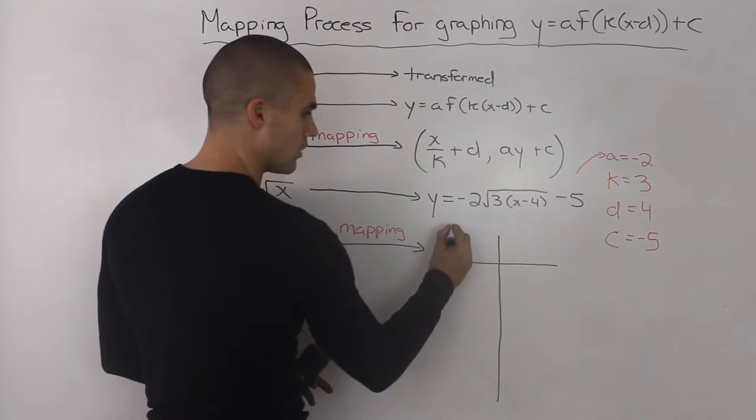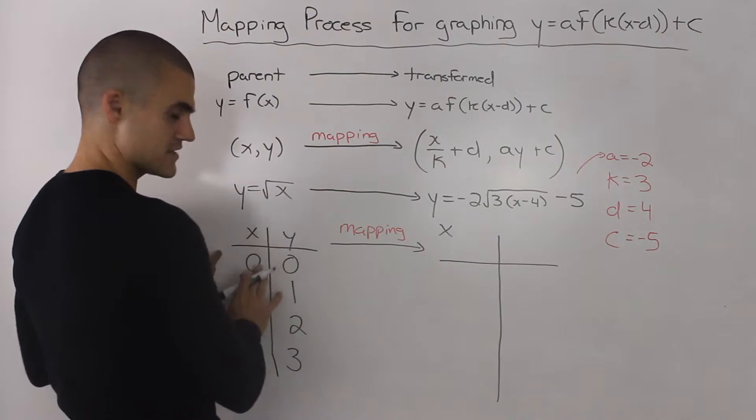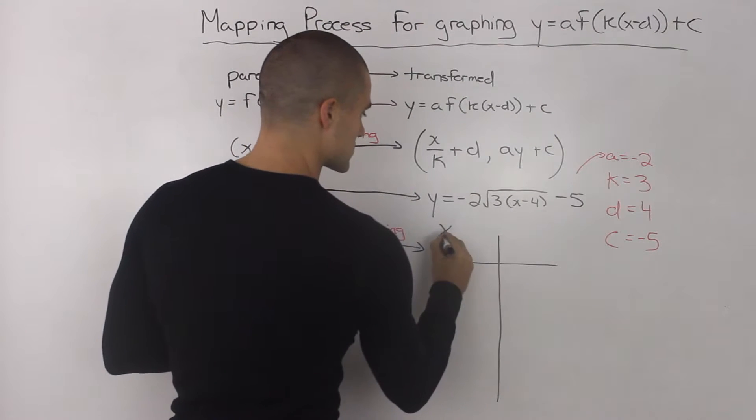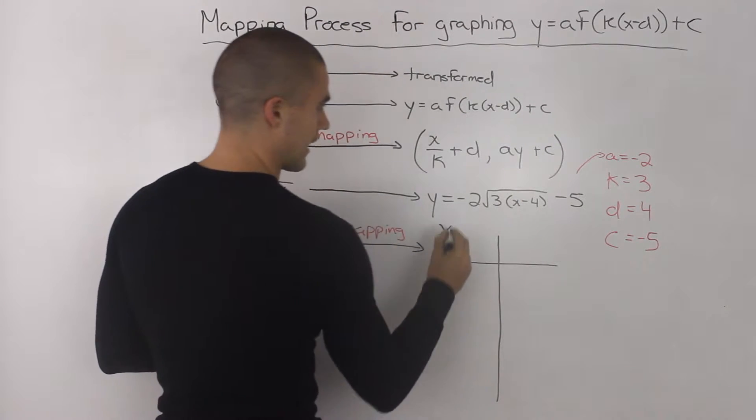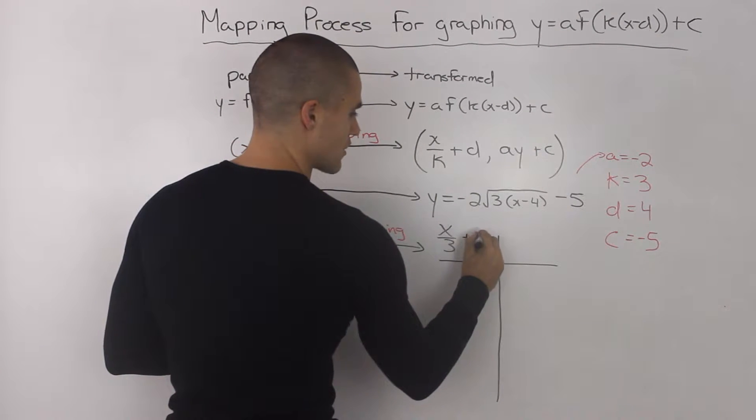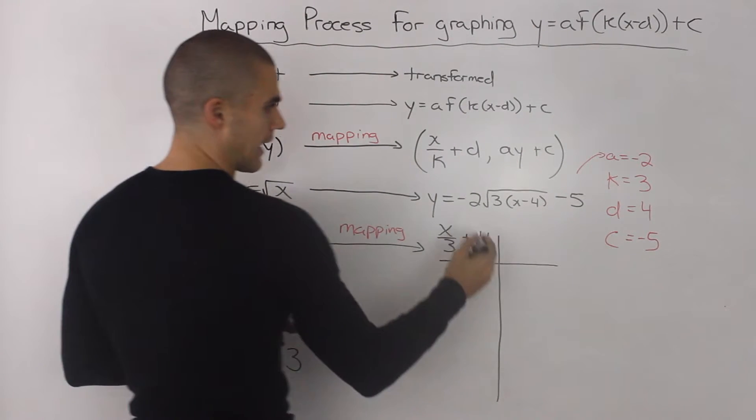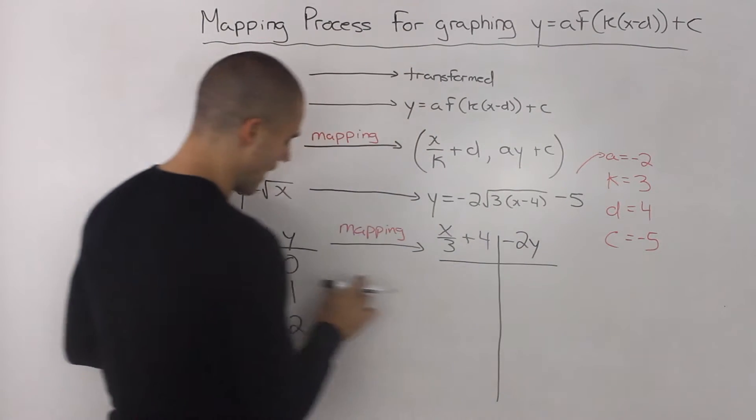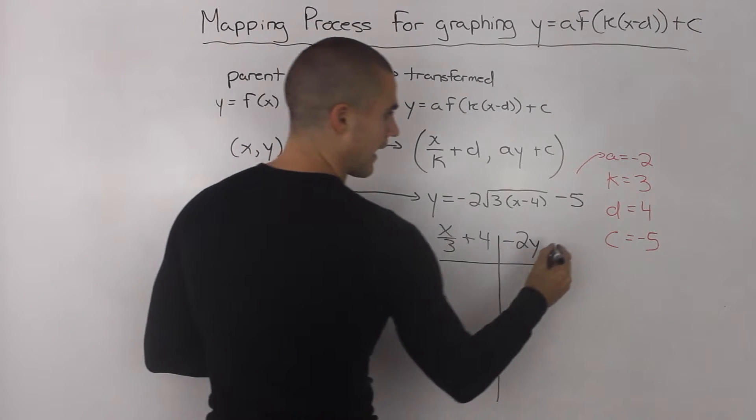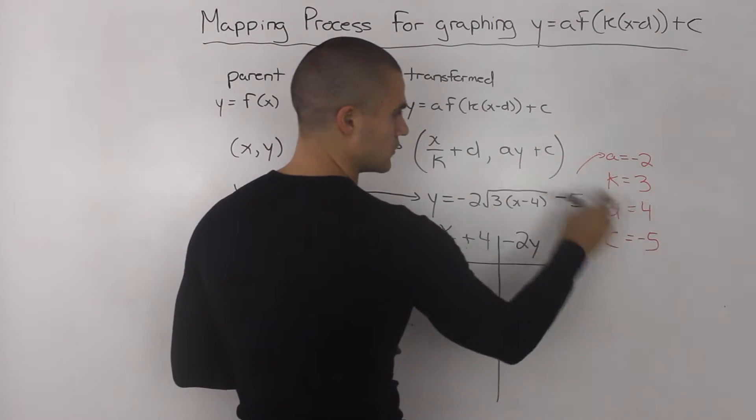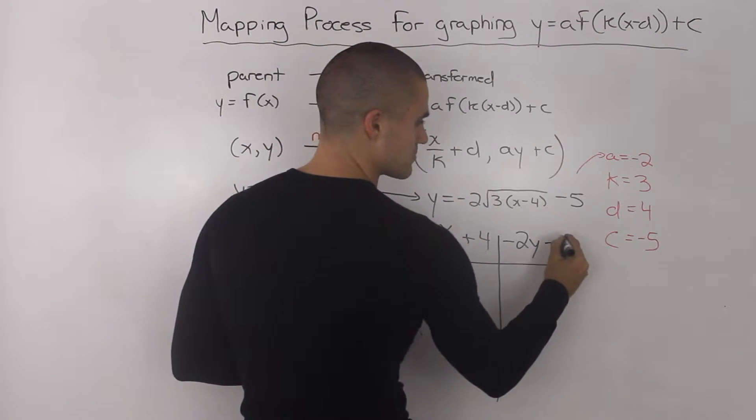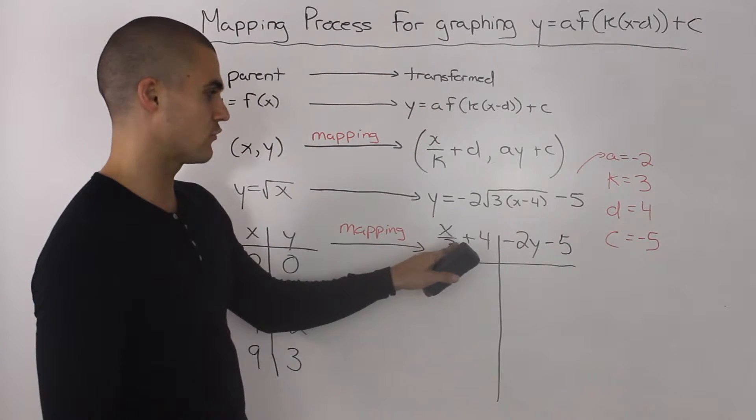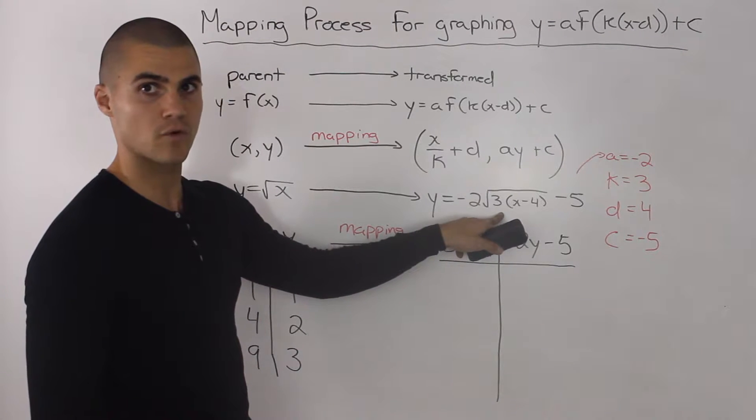The table for the transform function is going to depend on this formula. We're going to take all of the x values from this table, divide them by k—the k value is 3—and then add d, the d value is 4. Then we're going to take our a value, negative 2, multiply it by all the y values from this table and then add our value of c, which is negative 5. This here is our mapping formula for this transform function.